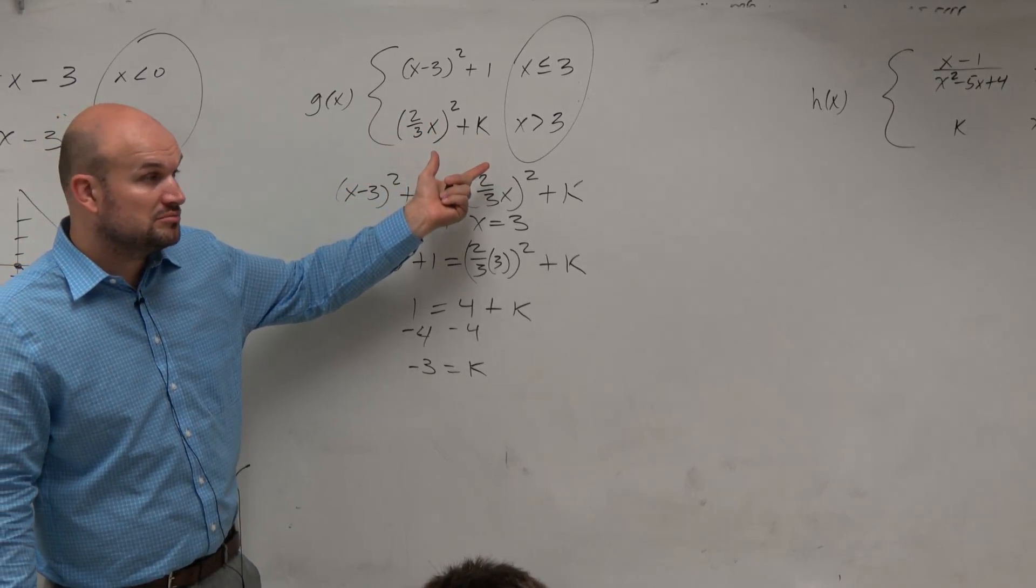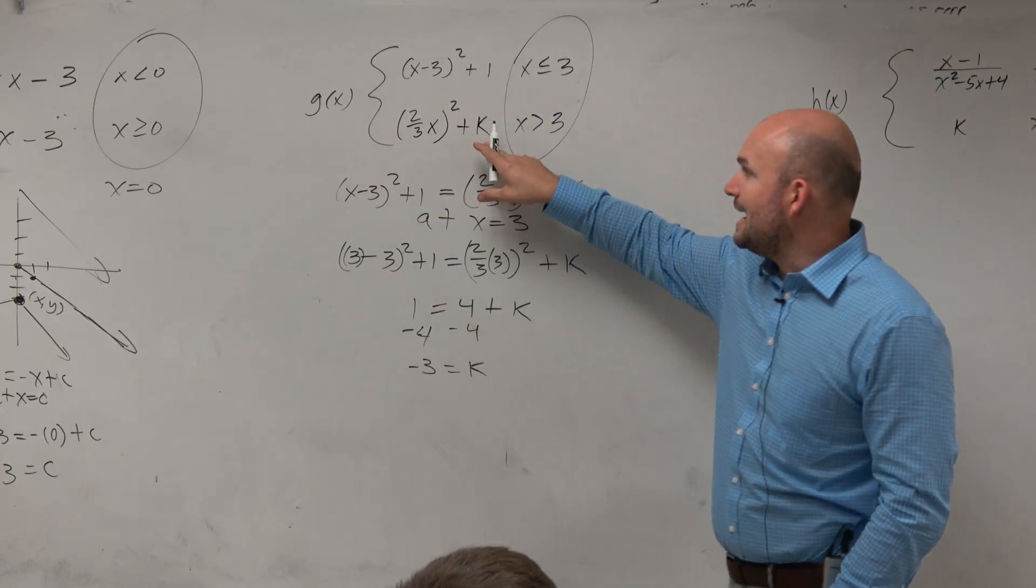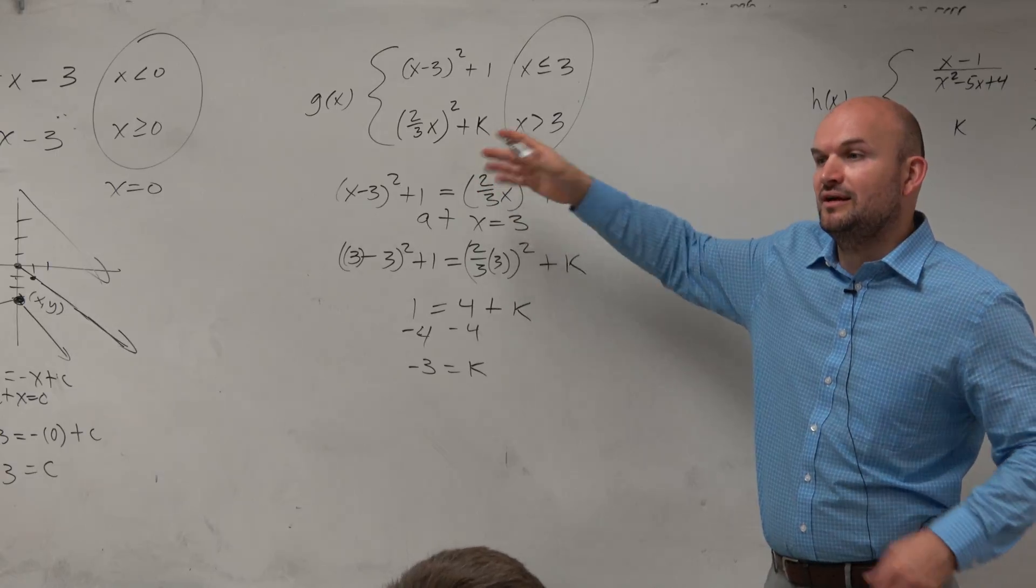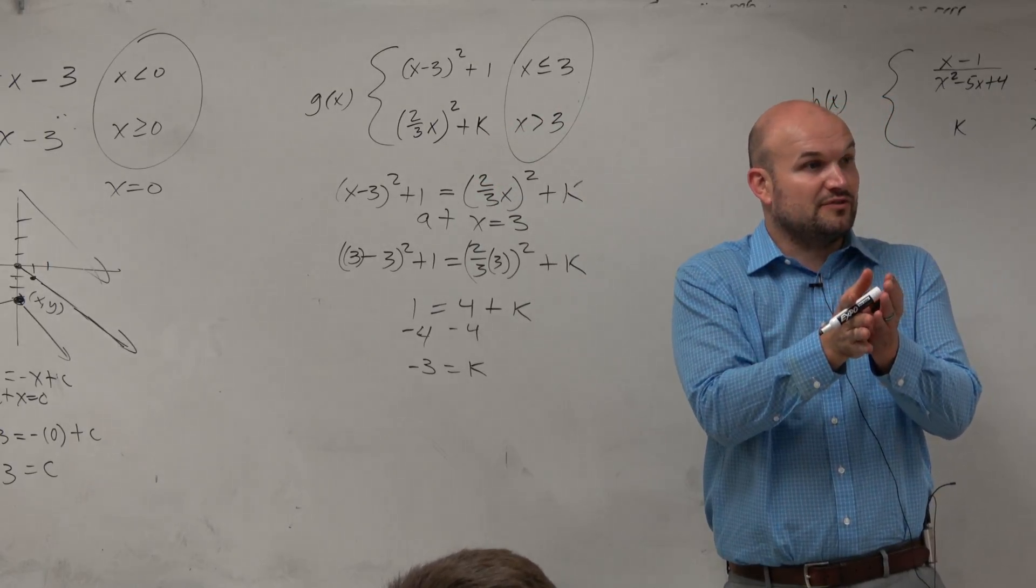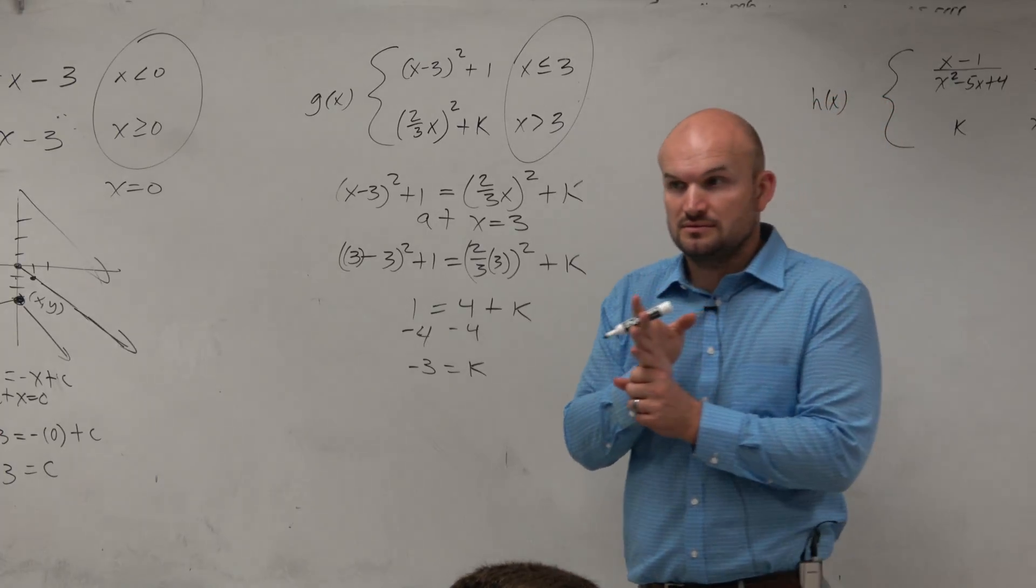And if you want to, go ahead, graph these two functions with k equal to negative 3. And what you'll see is when x equals negative 3, or I'm sorry, when x equals 3, they cross. That's where they intersect.